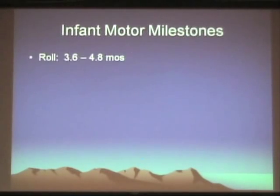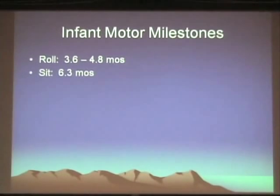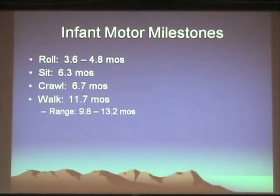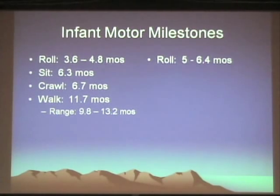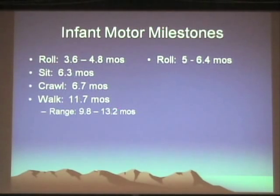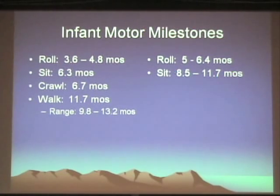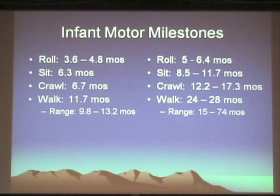Turning to motor development — typical children roll around four months, sit around six, crawl around six and a half months, and walk around one year. Comparing with children with Down syndrome, everything is on the later side, though early milestones are closer than later ones. Rolling is between five and six and a half months, sitting between eight and eleven months, crawling between twelve and eighteen months, and walking closer to two years — sometimes up to two and a half years.